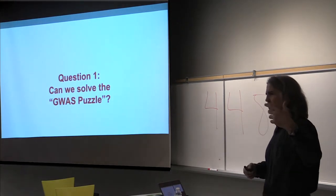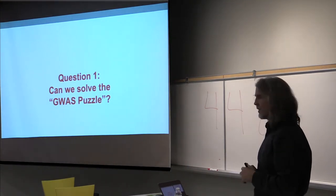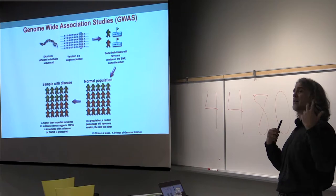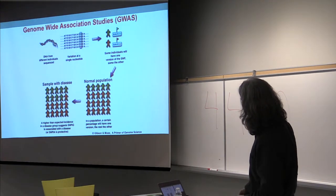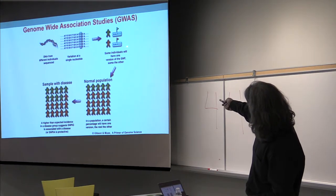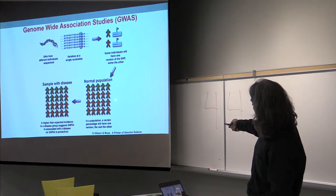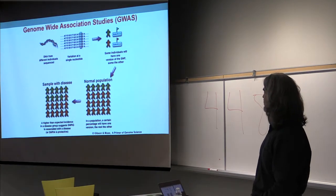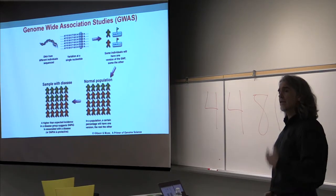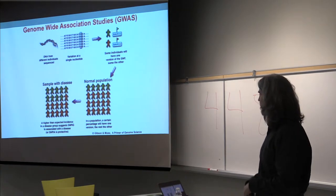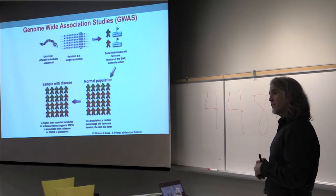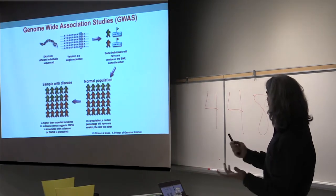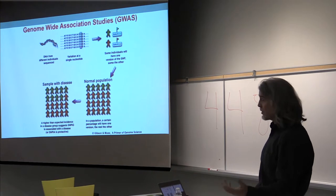The Network Zoo is now integrated in a well-put-together package on GitHub. Today I'm going to primarily talk about PANDA and CONDOR, and touch on LIONESS. Can we solve the GWAS puzzle? GWAS — genome-wide association studies — is a widely applied method. We take individuals, genotype them to get their SNP genotypes at each locus across the genome, then look for an over-representation of a particular allele in a disease versus control population.